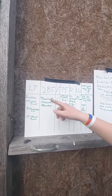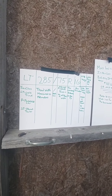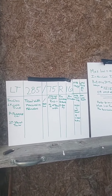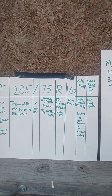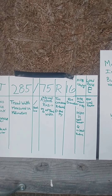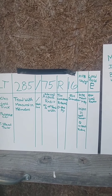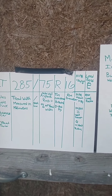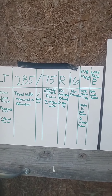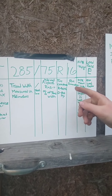The second part is 285 — that's your tread width measured in millimeters. The third part is 75, and that's your sidewall aspect ratio. Basically, 75 means the sidewall height is 75% of the width of the tread. So in this particular case, the height would be 75% of 285 millimeters.